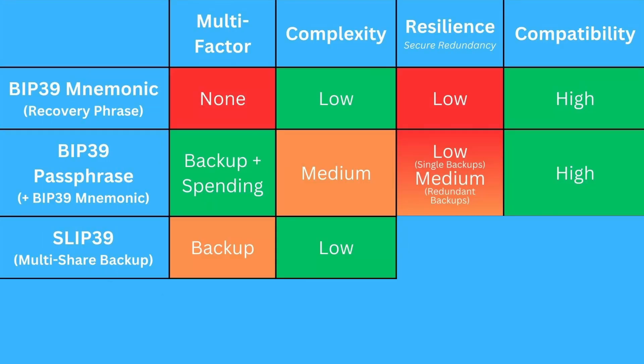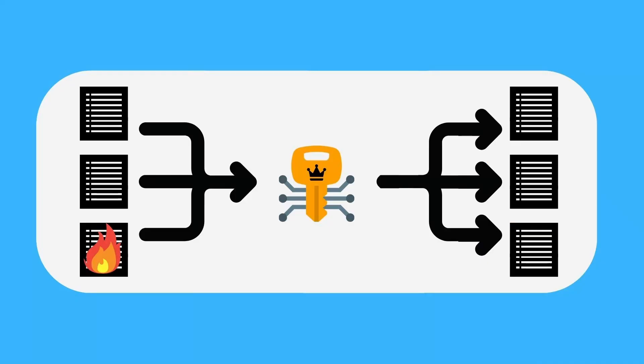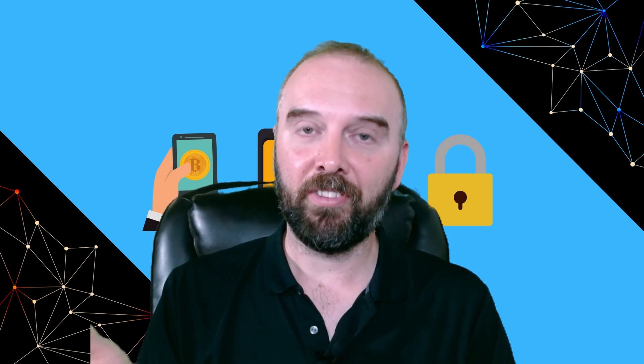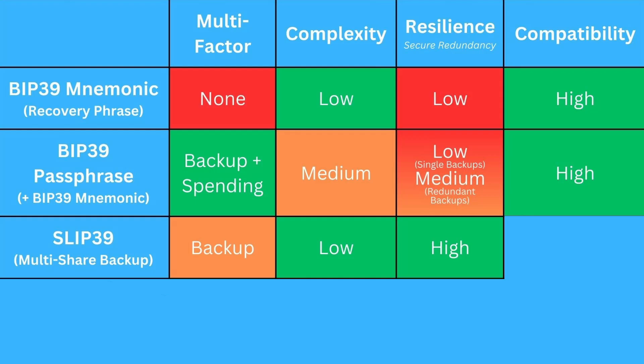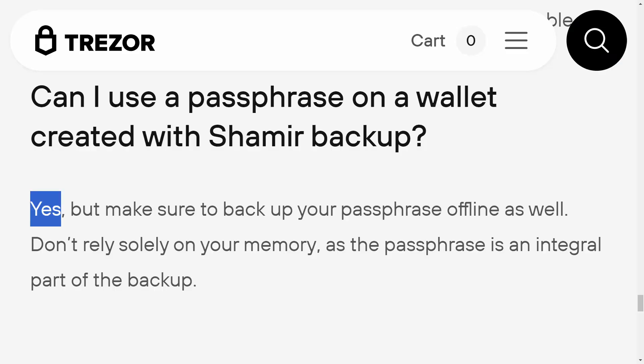One of the other big advantages with SLIP39 is the ability to rework an existing backup into a new multi-share backup. This is particularly useful over the long term in situations where one of the recovery shares might get lost or damaged. Even if someone discovers one of the backup shares, that share on its own is actually useless — which also provides a privacy advantage, allowing you to spread your backup over multiple locations without degrading security. You can also use SLIP39 with a passphrase, adding most of the advantages and disadvantages of a BIP39 passphrase to your SLIP39 wallet.